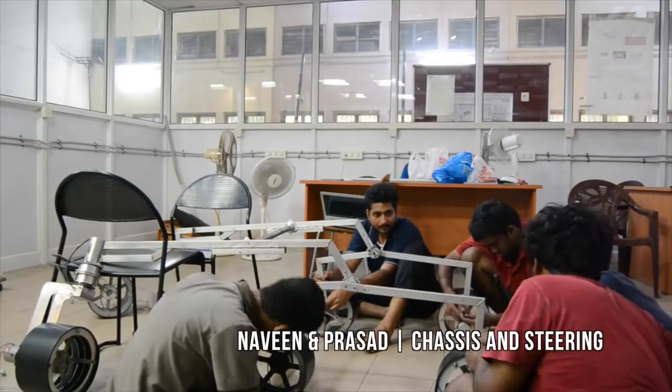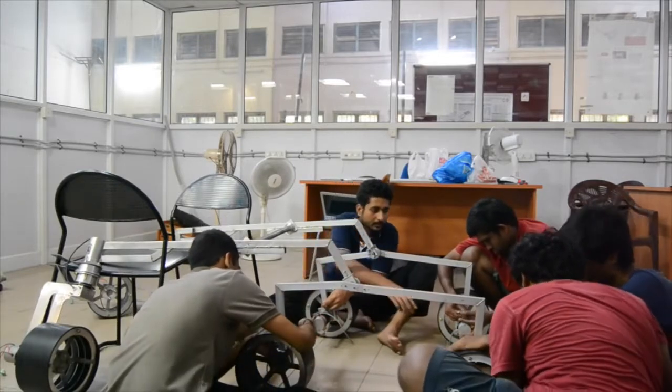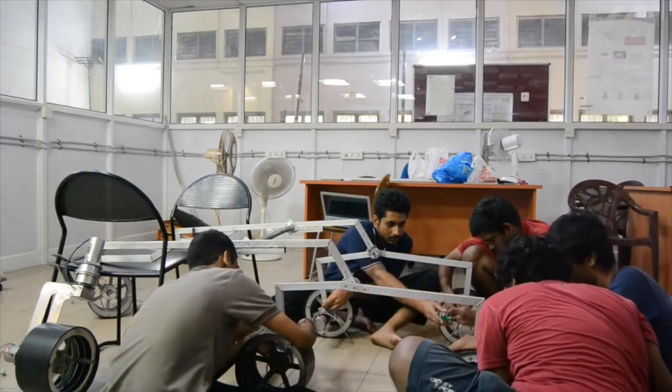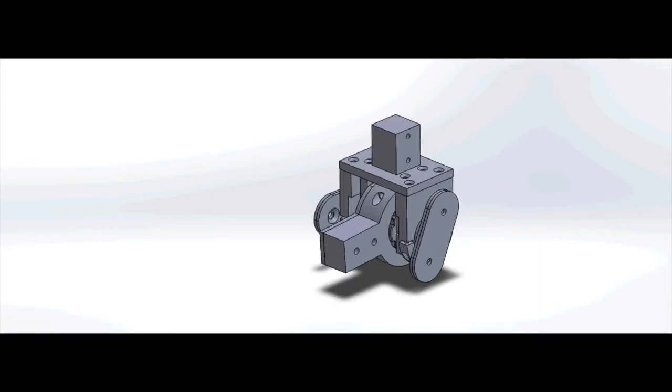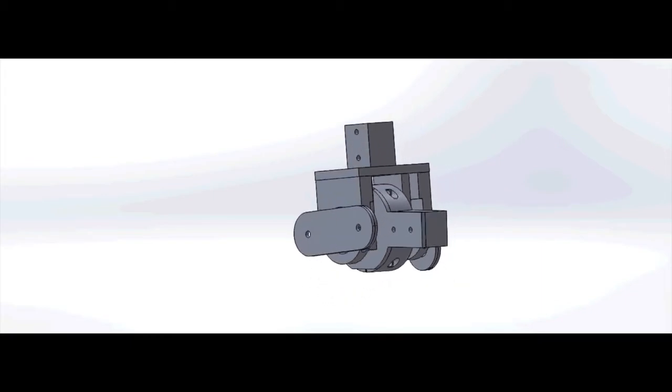A rocker-bogie type suspension was chosen for the rover. This type of suspension ensures all the wheels remain in contact with the ground without using springs or struts. Furthermore, six wheels provide much more traction and reduce the load on individual motors.